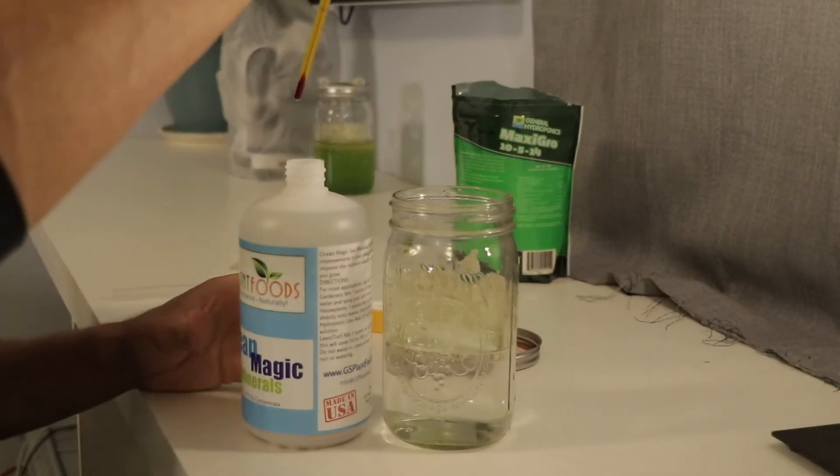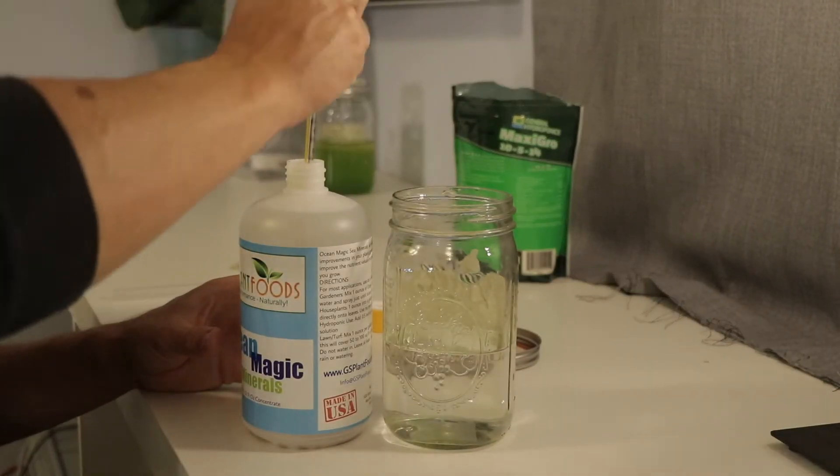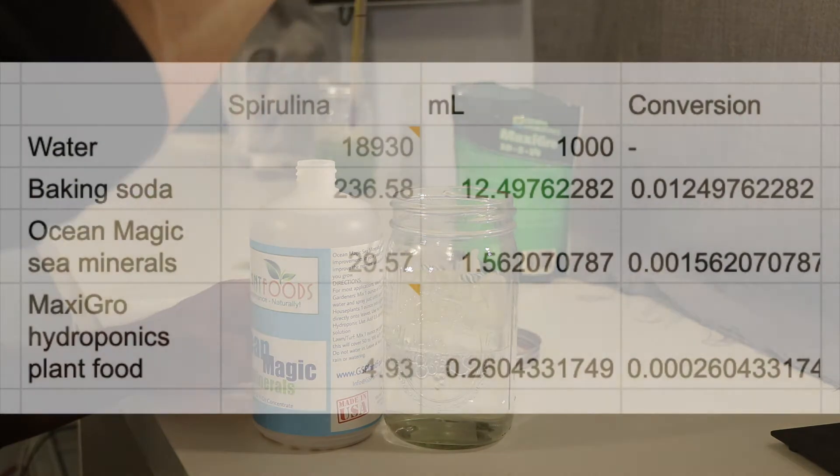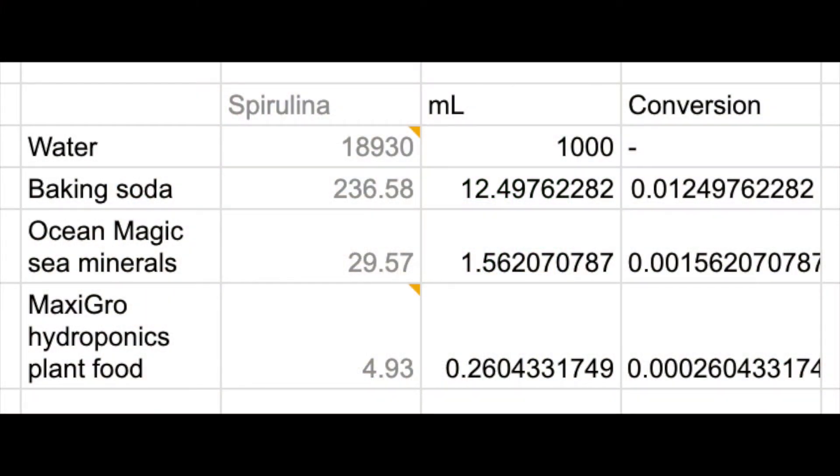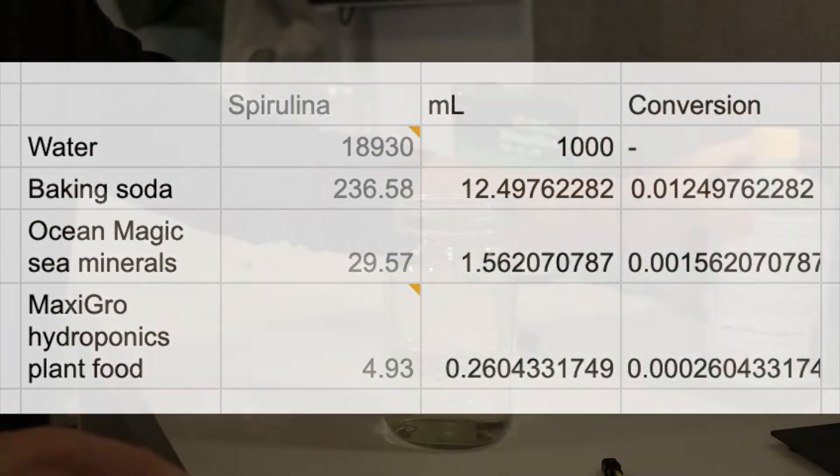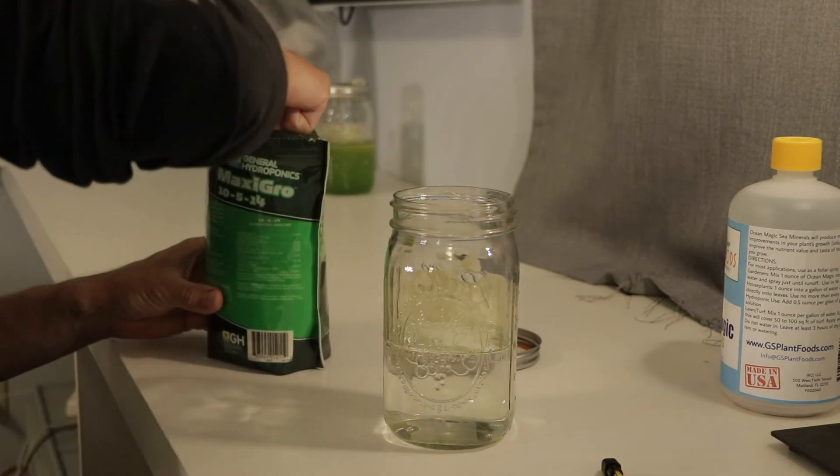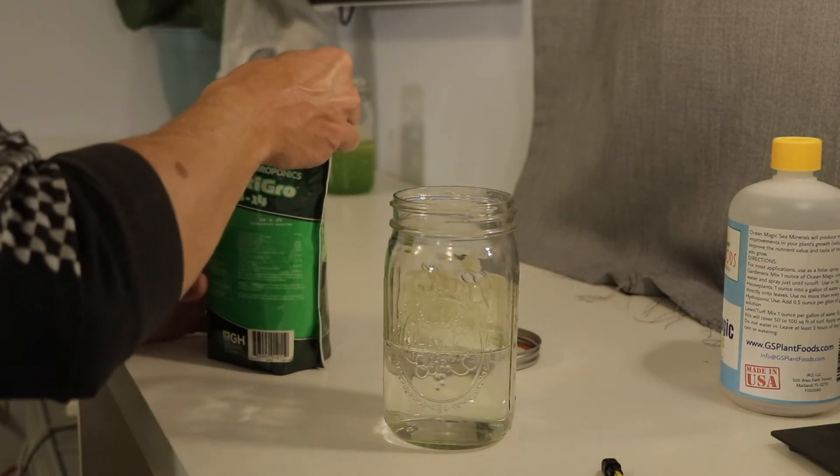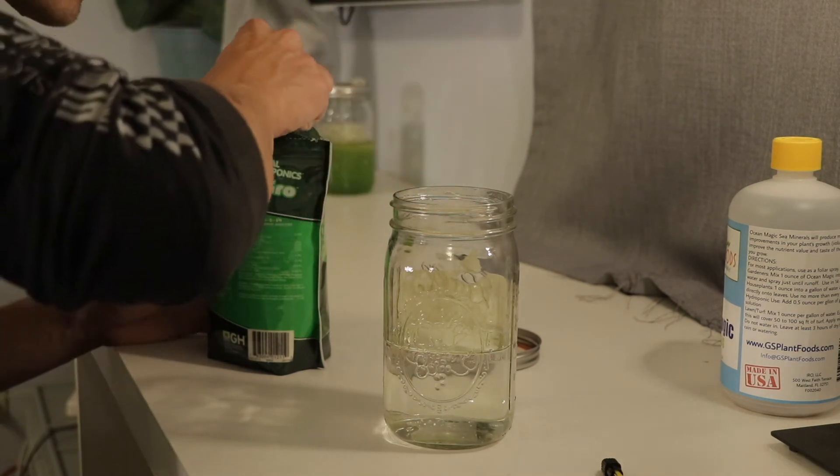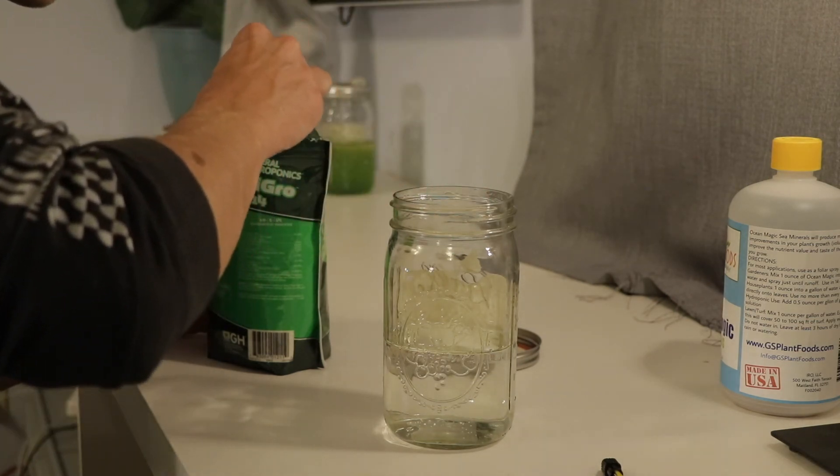I'll include a photo of the conversion for spirulina as well. But basically, what I'm looking at is for every 1,000 milliliters of distilled water for spirulina, I am adding about 12.5 grams of baking soda, 1.56 grams of ocean magic sea minerals, and 0.26 grams of maxi grow hydroponics plant food.